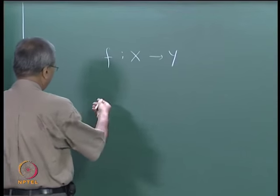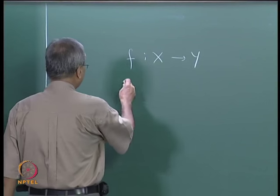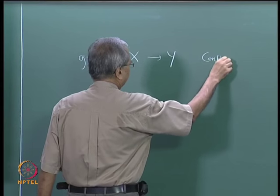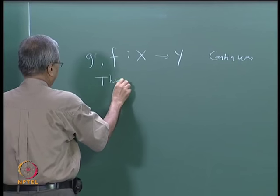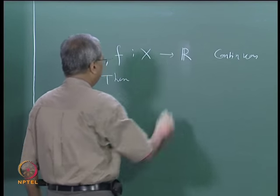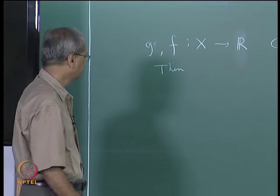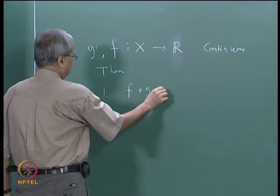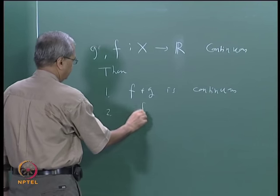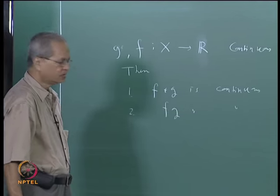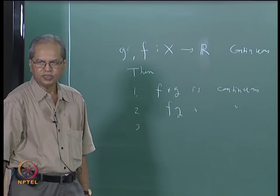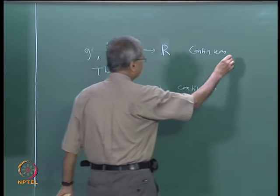Now let us record a few more things that follow from this. Suppose f and g are real valued functions defined on a metric space x, taking values in R, and suppose both of them are continuous. Then we want to say that f plus g is continuous.